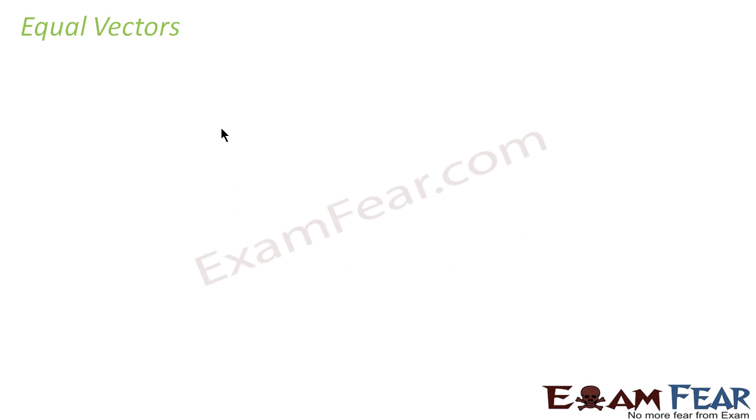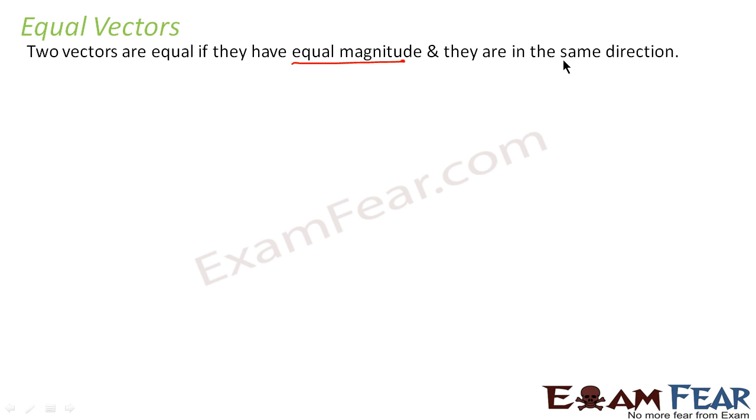Another important topic which we'll discuss is unit vectors. Before that, let us look at equal vectors. What are equal vectors? Two vectors are said to be equal if they have equal magnitude and they are in the same direction. When we talk of vectors, two things are important: one is magnitude, the other is direction. So when two vectors are equal, their magnitudes are equal as well as their directions are equal.